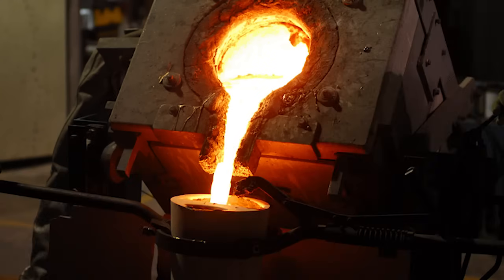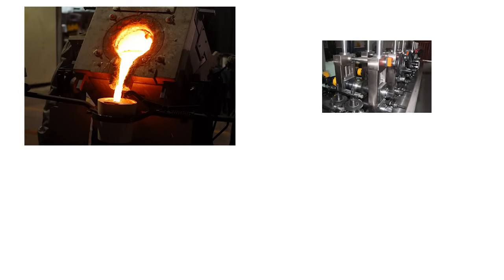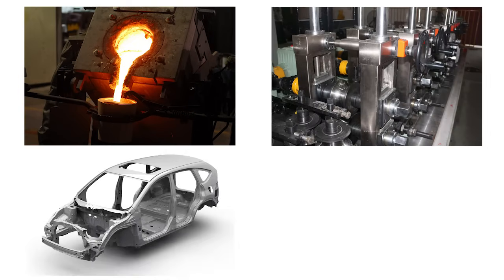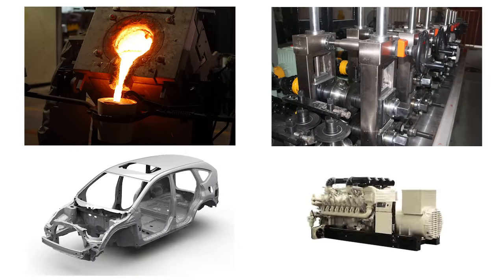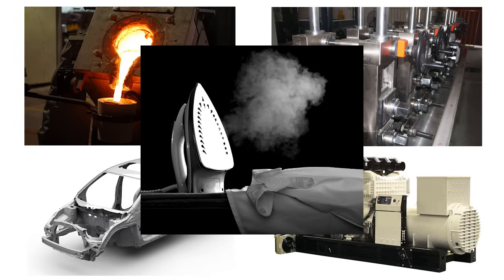Heat is used in industry to melt metal and make various types of heavy duty machinery like automobiles and generators. It is also used in household appliances like the electric or steam iron. Heat and its properties is an important topic of physics as well.